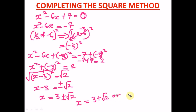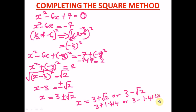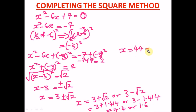We can break this down as: x equals 3 plus root 2, or x equals 3 minus root 2. Since root 2 is approximately 1.414, we get: 3 plus 1.414 equals approximately 4.4, and 3 minus 1.414 equals approximately 1.6. So our answer is x equals 4.4 or x equals 1.6.